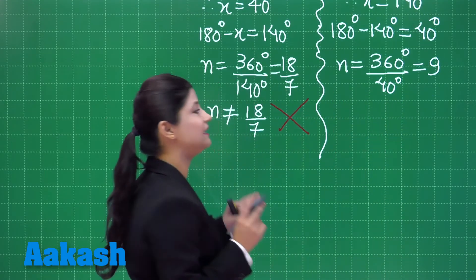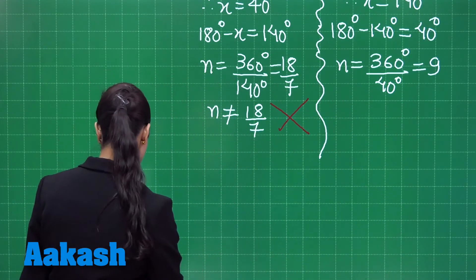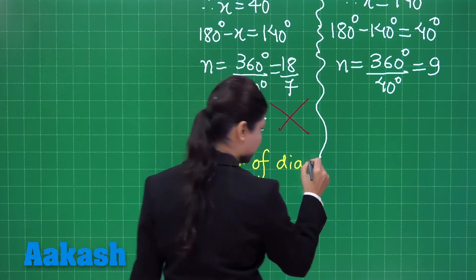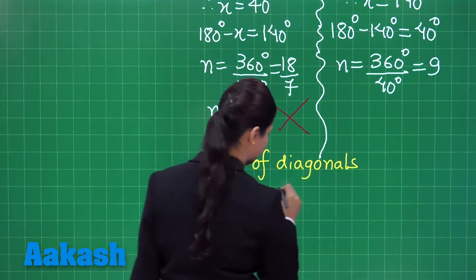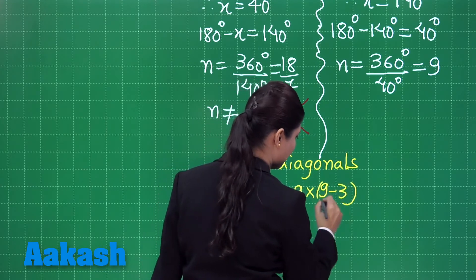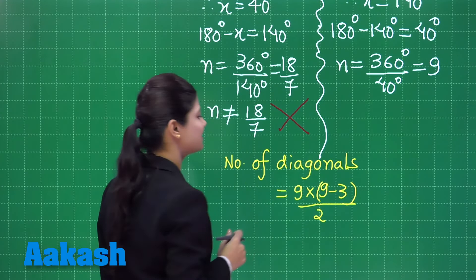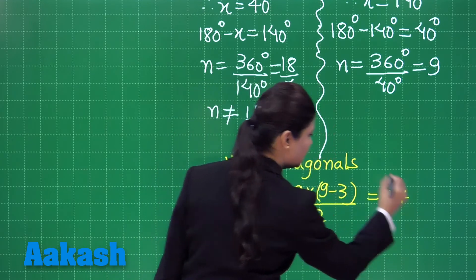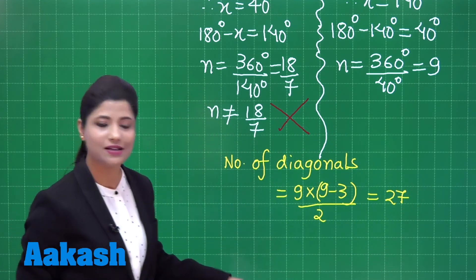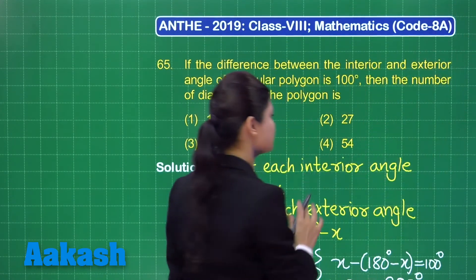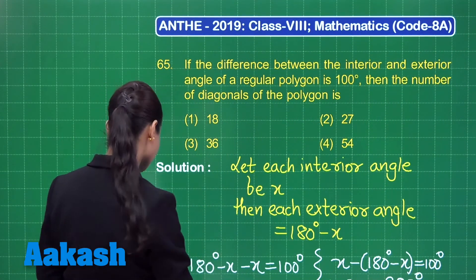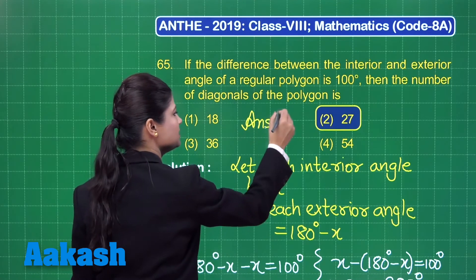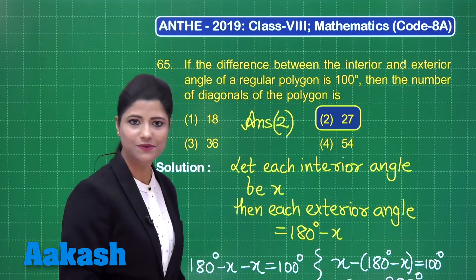Now we obtain the number of diagonals using the formula n(n−3)/2. With n = 9: 9 × (9 − 3) / 2 = 9 × 6 / 2 = 54/2 = 27. So the polygon has 27 diagonals. Out of the four options, the answer is 27, which is option number 2.